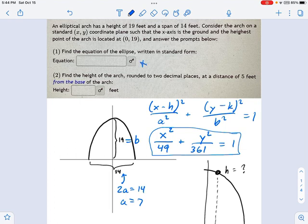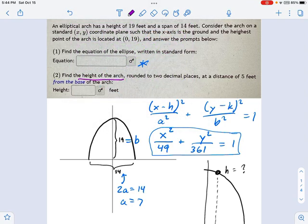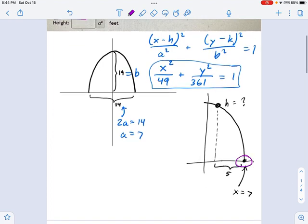Now, the next part is to find the height of the arch, rounded to two decimal places, at a distance. And here's the important part: a distance of 5 feet from the base. I want you to keep your eye on that description and think about what that means. The base of the arch is where it touches the ground. Okay, we're talking over here. So 5 feet from that base, that's pretty close to the center. We're actually only 2 feet from the center right here. Okay, so this is going to be x equals 2 at that location.